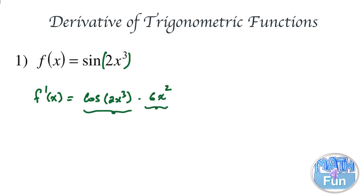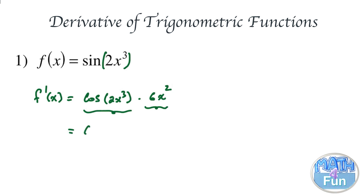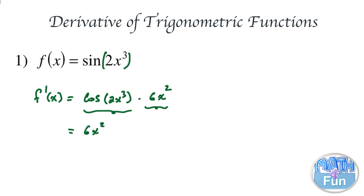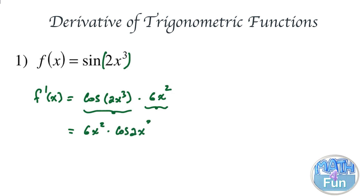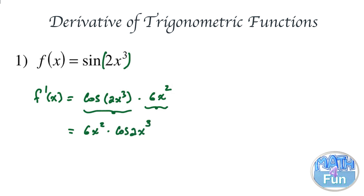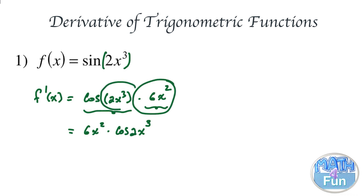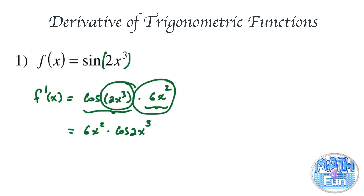To write it properly, we put 6x squared at the beginning, multiplied by cosine 2x to the power of 3. Sometimes students multiply the 6x squared into the cosine argument, which is a mistake.